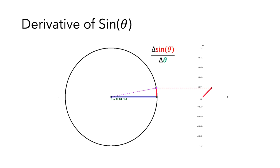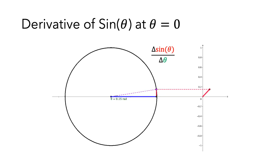Let's think about the derivative when theta equals 0. Let's look at what happens when we start increasing theta by a little amount. Think about how the length of the opposite side of the triangle grows in comparison to the measure of the angle. As theta increased, the length of the adjacent side, the blue line, didn't change. So all of theta's increase went into the opposite side of the triangle, the red line. This suggests that when theta was 0, the length of the red line increased the same amount as theta. This tells us that when theta equals 0, the derivative of sine is 1.